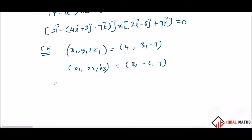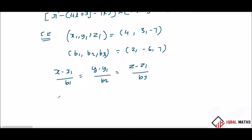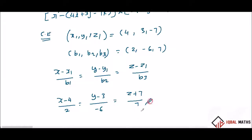The line equation is: x minus x1 over b1 equals y minus y1 over b2 equals z minus z1 over b3. Applying the values: x minus 4 over 2 equals y minus 3 over minus 6 equals z plus 7 over 7. Note that z minus negative 7 becomes z plus 7.